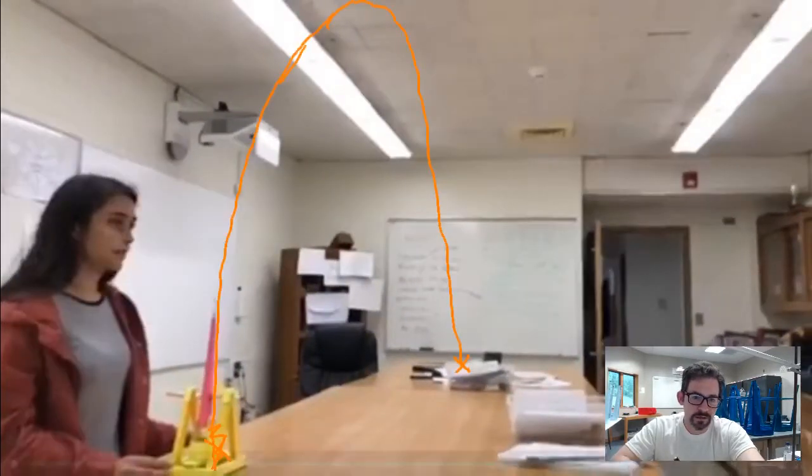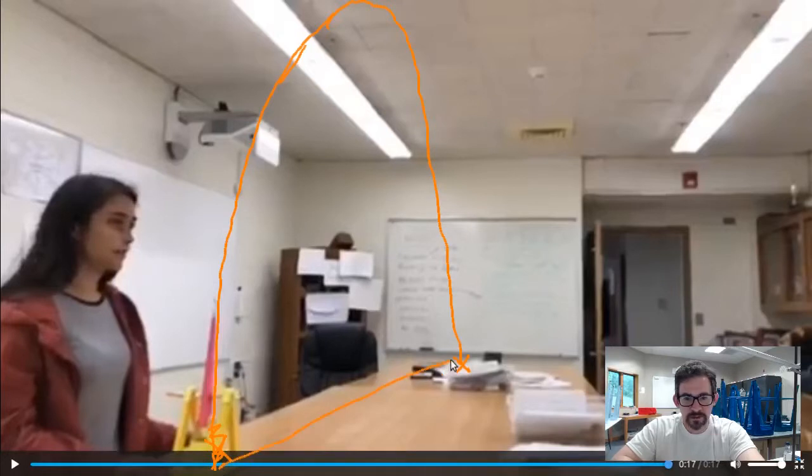And what we want to know is if the projectile travels a distance d and it rises to a distance h vertically, how can we describe that with an equation? How can we model this behavior with an equation? And that's our goal.